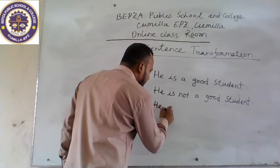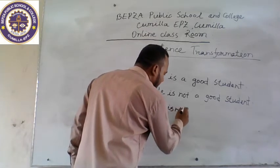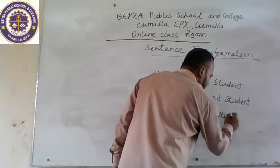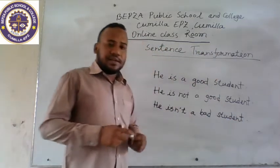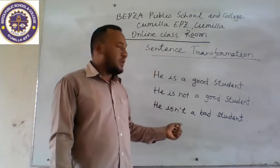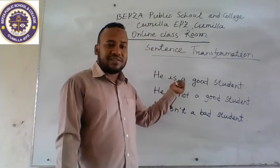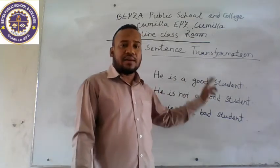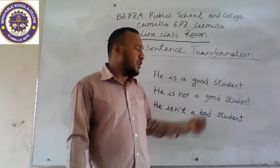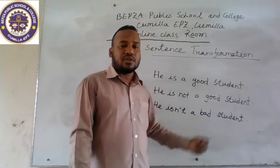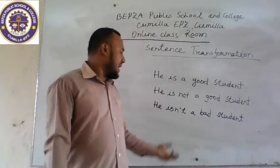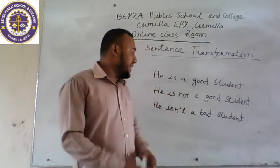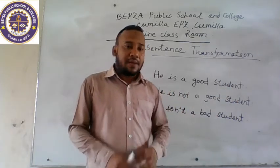The correct negative form is: 'He is not a bad student.' It is correct. Here, we change the auxiliary verb 'is' to 'isn't', and then we write the opposite word of the key word in the affirmative sentence. 'Good' — its opposite word is 'bad.' So there is no change in the original meaning. 'He is a good student' means 'He is not a bad student.'